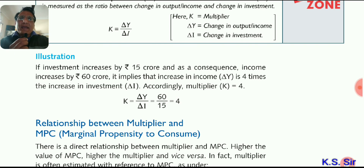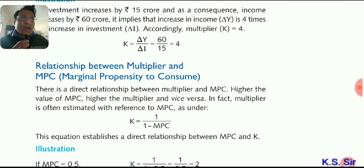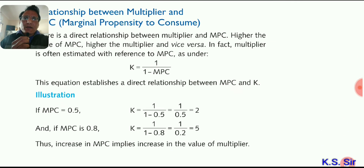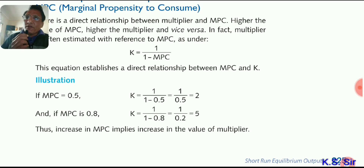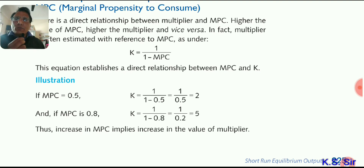Relationship between multiplier and MPC. The formula is K equals 1 divided by (1 minus MPC). There is a direct relation — as MPC increases, the multiplier value increases. For example, if MPC equals 0.5, then K equals 1 divided by (1 minus 0.5) equals 1 divided by 0.5 equals 2. So a multiplier of 2 means 100 crore extra investment generates 200 crore income.